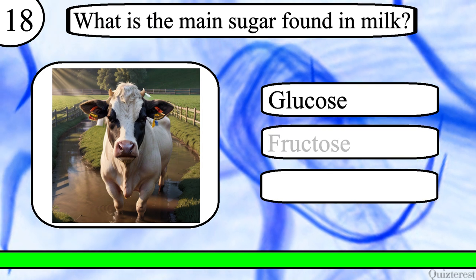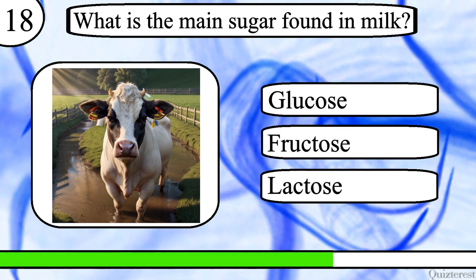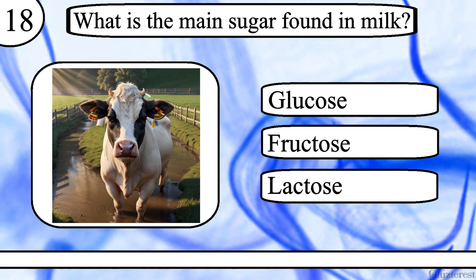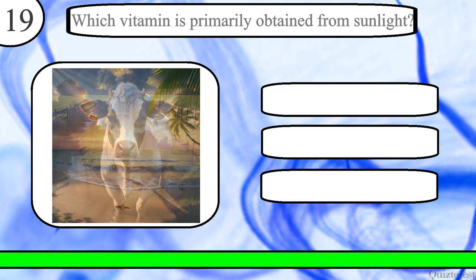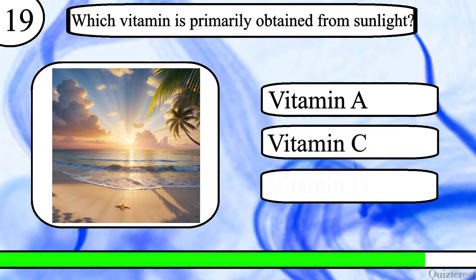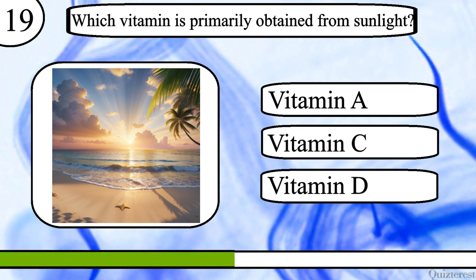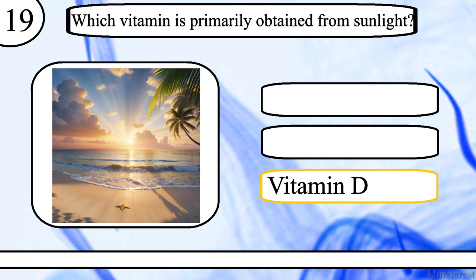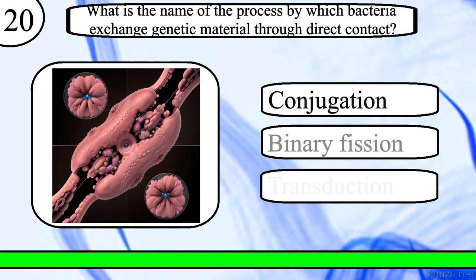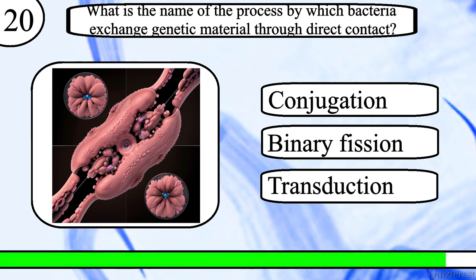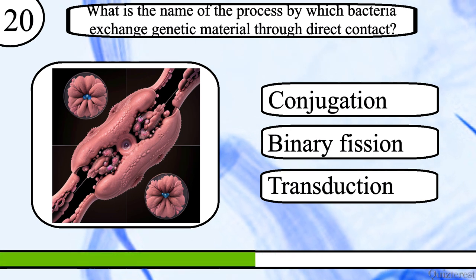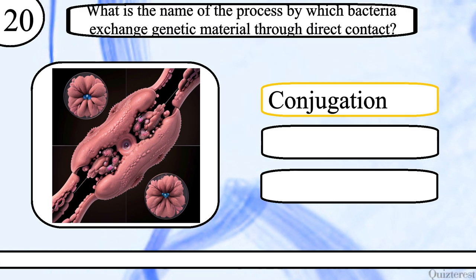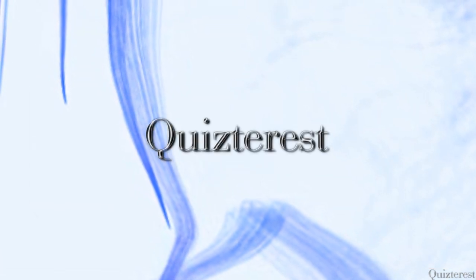Question 18. What is the main sugar found in milk? Glucose, fructose or lactose? The correct answer is lactose. Question 19. What is the name of the process by which bacteria exchange genetic material through direct contact? Conjugation, binary fission or transduction? The correct answer is conjugation. How many questions did you get right? Let us know.